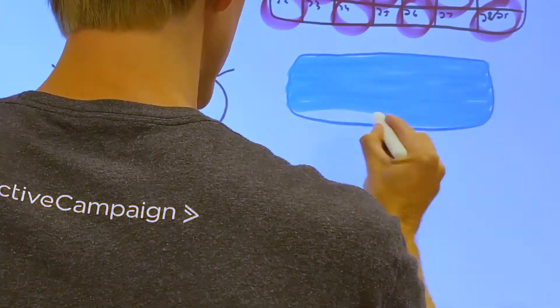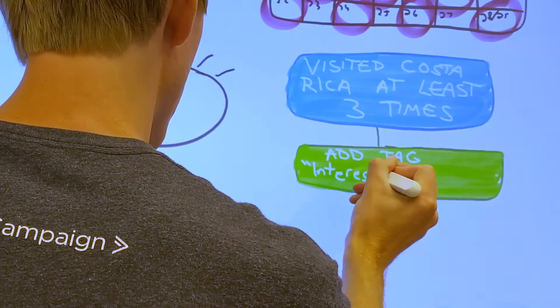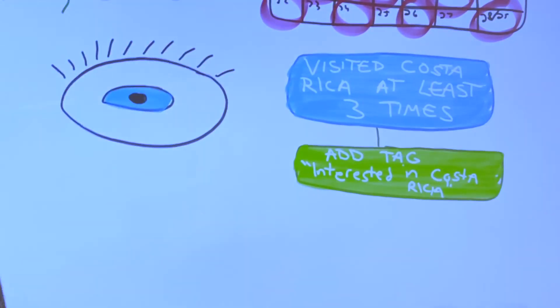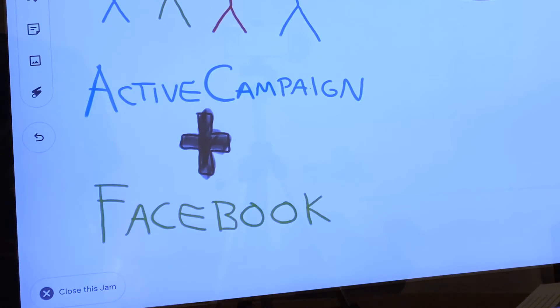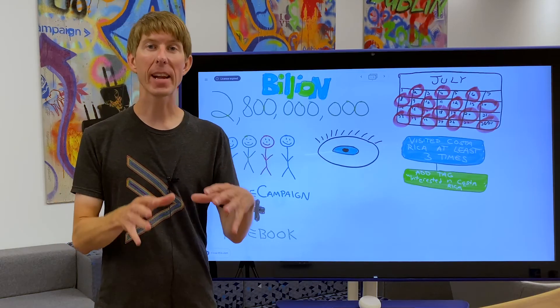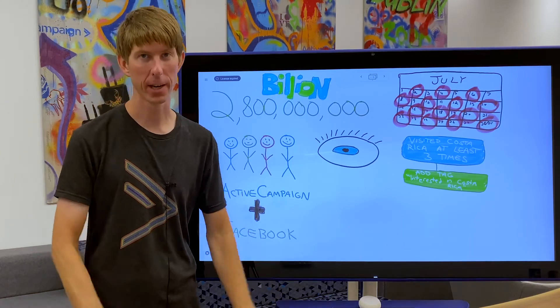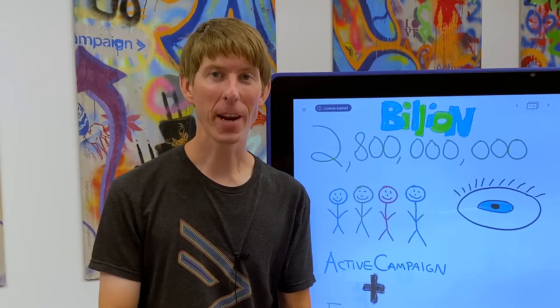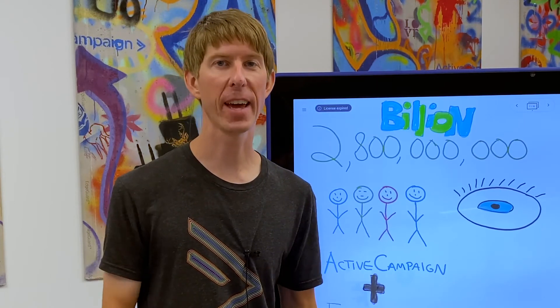Let's say you run a travel agency and you're using ActiveCampaign site tracking to see how your contacts are interacting with your site. You've built an automation that tags your contacts who are interested in your Costa Rica vacation package when they visited that page on your site at least three times. With the ActiveCampaign Facebook Custom Audiences integration, you can automatically add these prospective customers to a custom audience in Facebook, and use that custom audience to power Facebook ads that promote your Costa Rica vacation package.